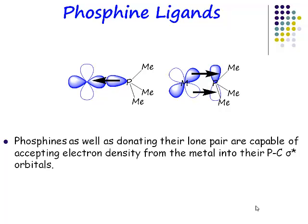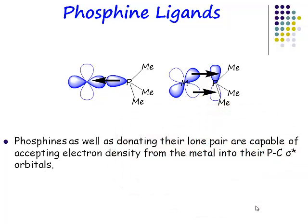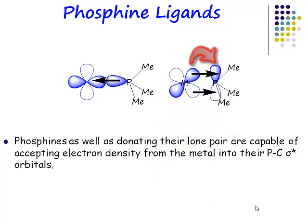If you have a phosphorus-carbon sigma bond then you will have a sigma-star orbital. In the case of phosphines, these sigma-star orbitals have symmetry that looks approximately like this — this is the sigma-star orbital on the phosphine ligand, antibonding with respect to the phosphorus-carbon bonds. This orbital has exactly the right symmetry to overlap with one of the occupied metal d-orbitals, allowing electron density to be donated from the metal d-orbitals into the sigma-star orbital on the phosphine.